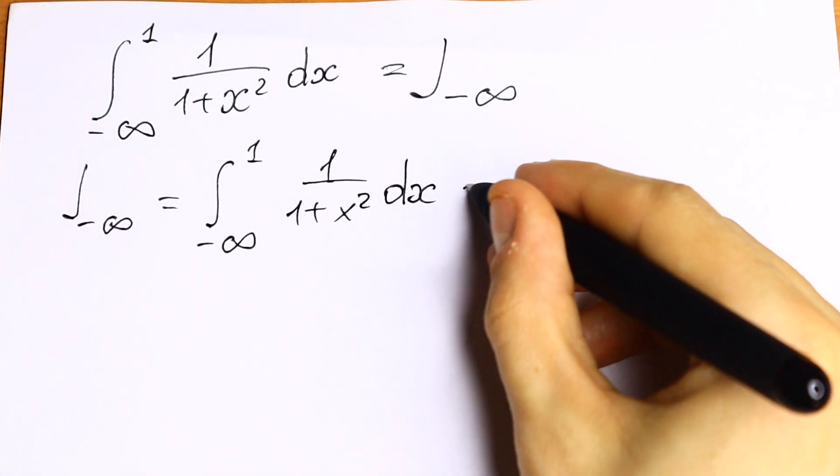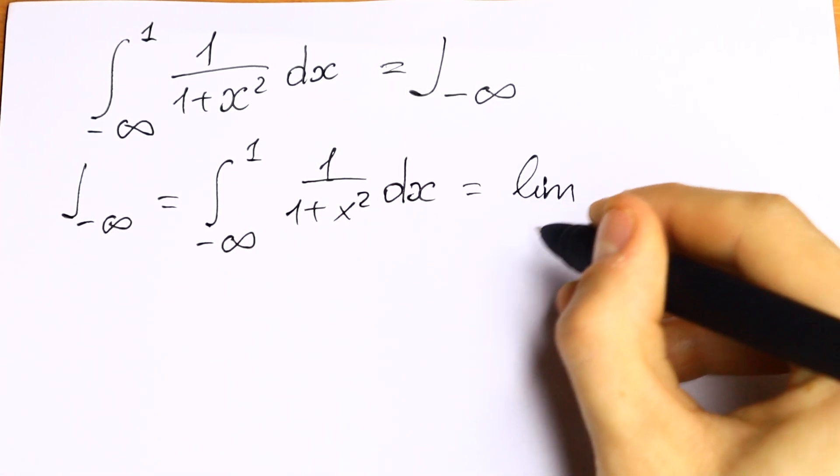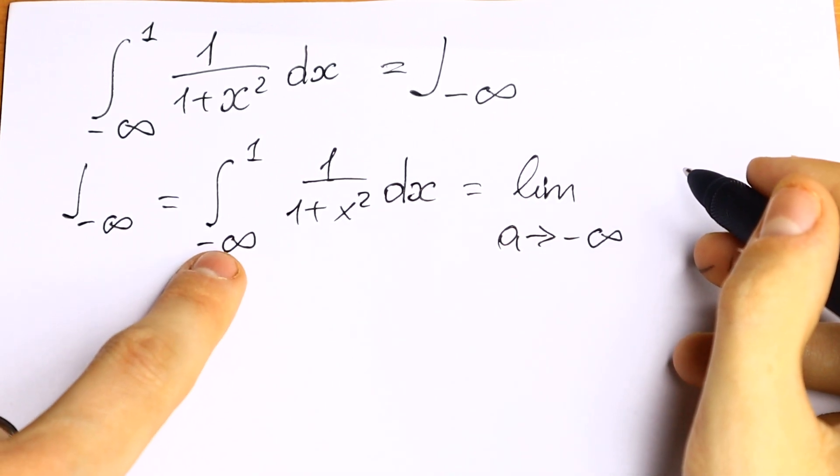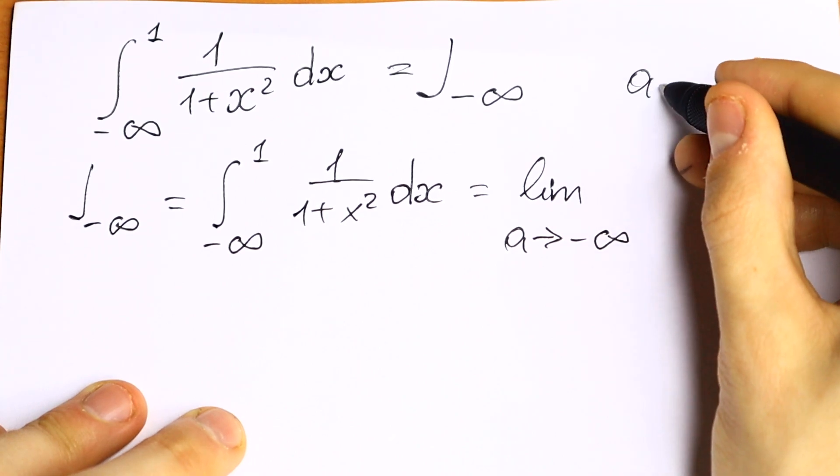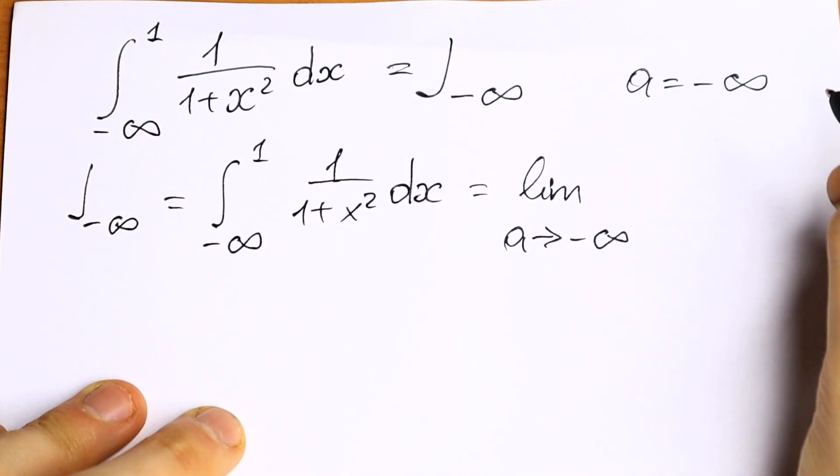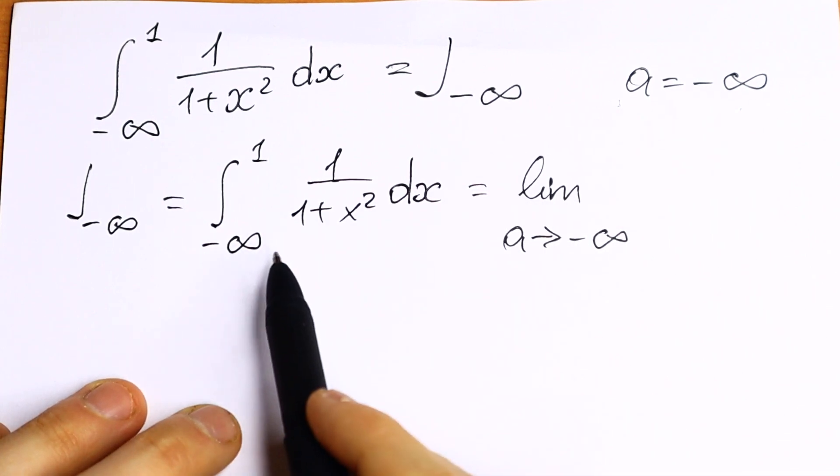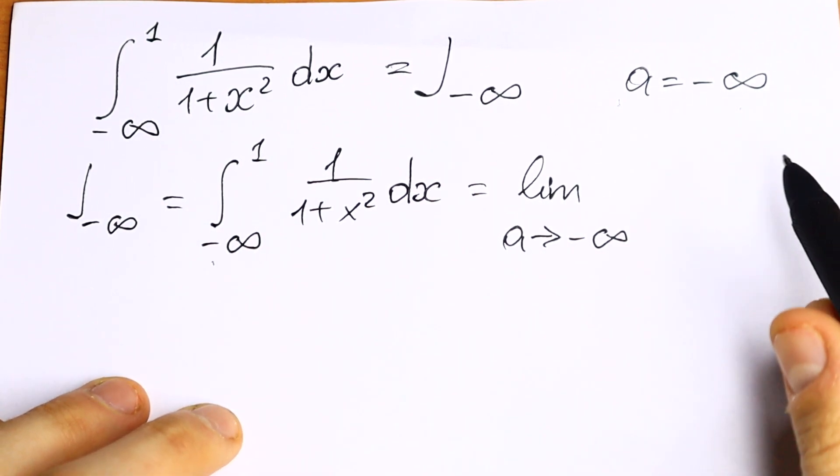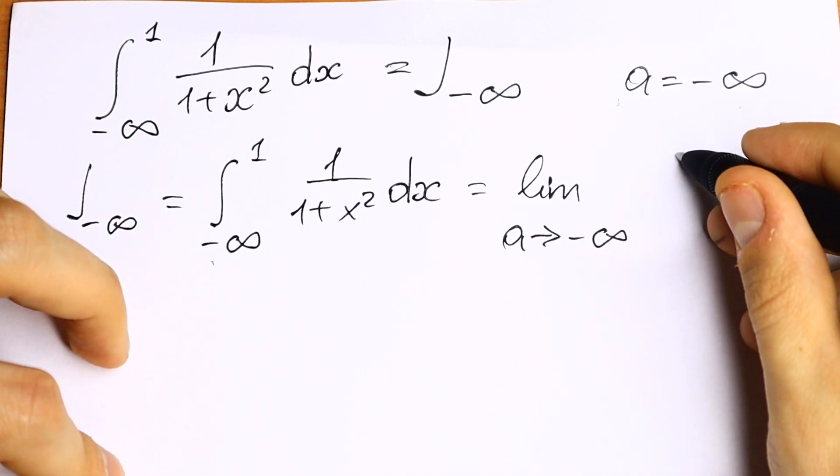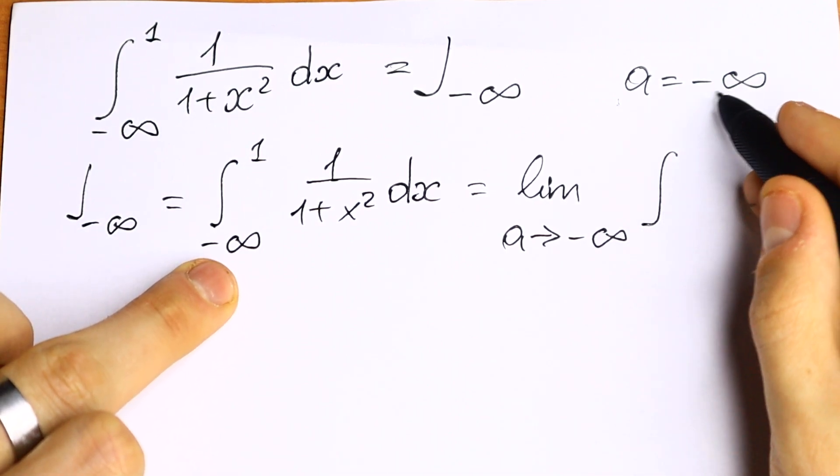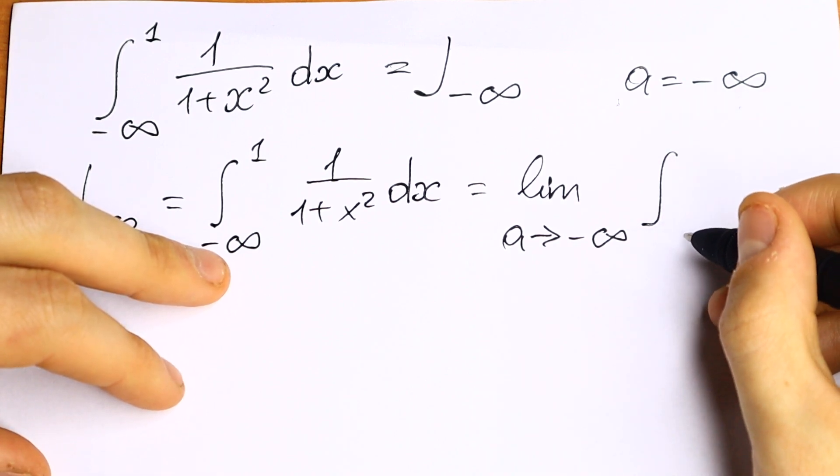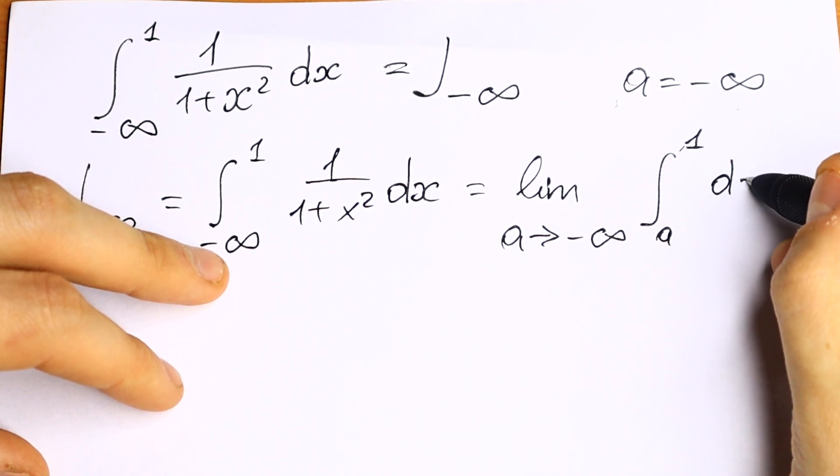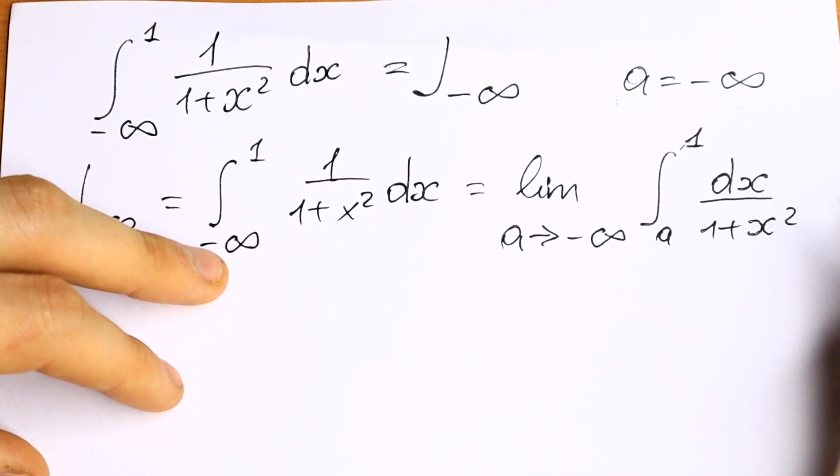And how can we solve this? We need to put a limit. So limit a approaches to minus infinity. We need to change this measure, so a equals minus infinity, and our limit will be approaching to minus infinity. But for the integral, instead of minus infinity we will have our a. So from a to 1, dx over 1 plus x squared.